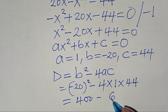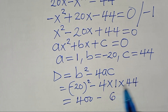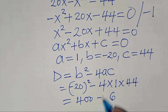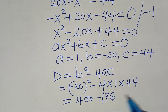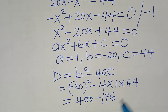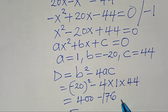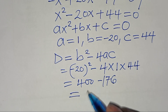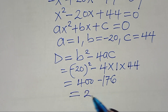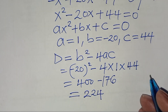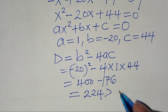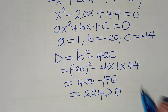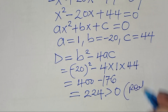4 times 44 is 176. So the discriminant is 400 minus 176, which is 224. Since 224 is greater than 0, we have two distinct real roots.